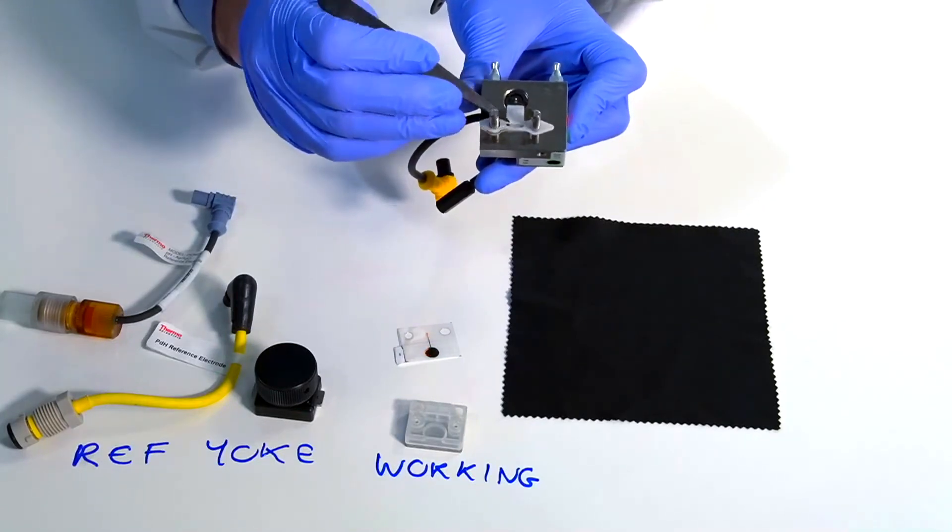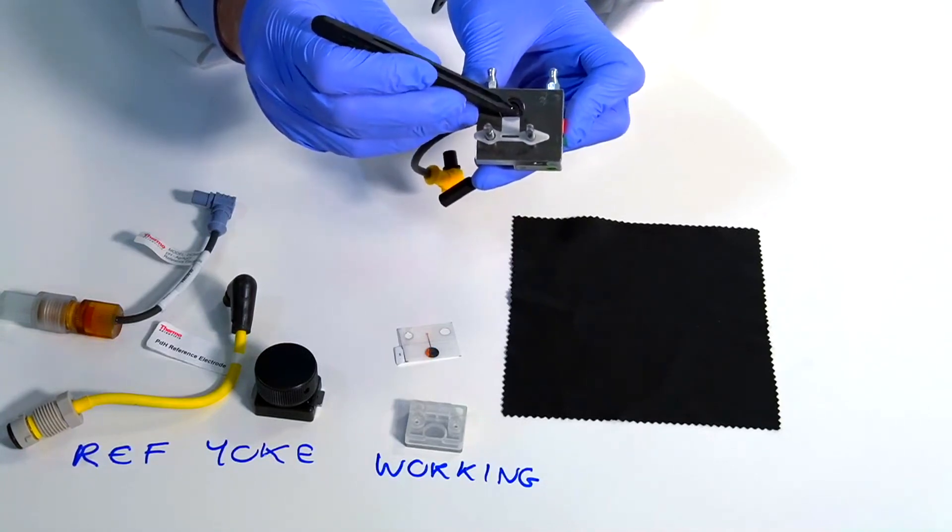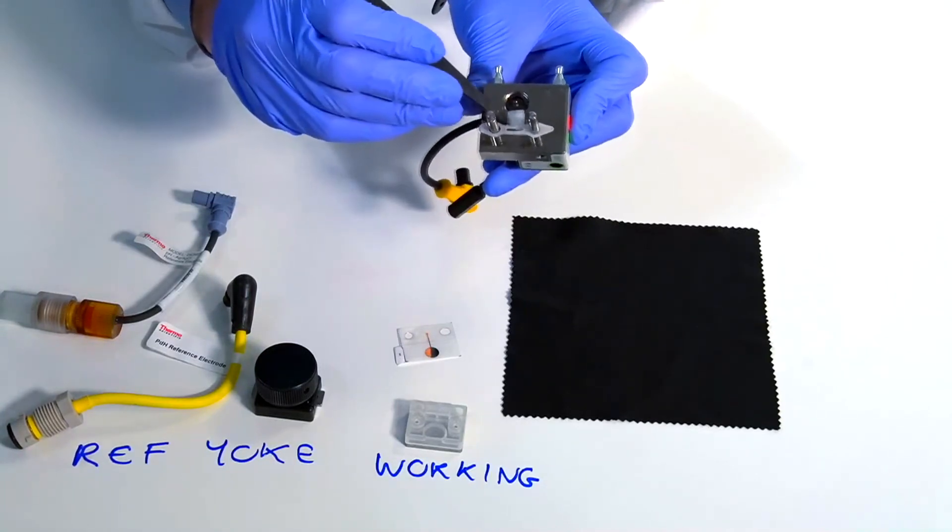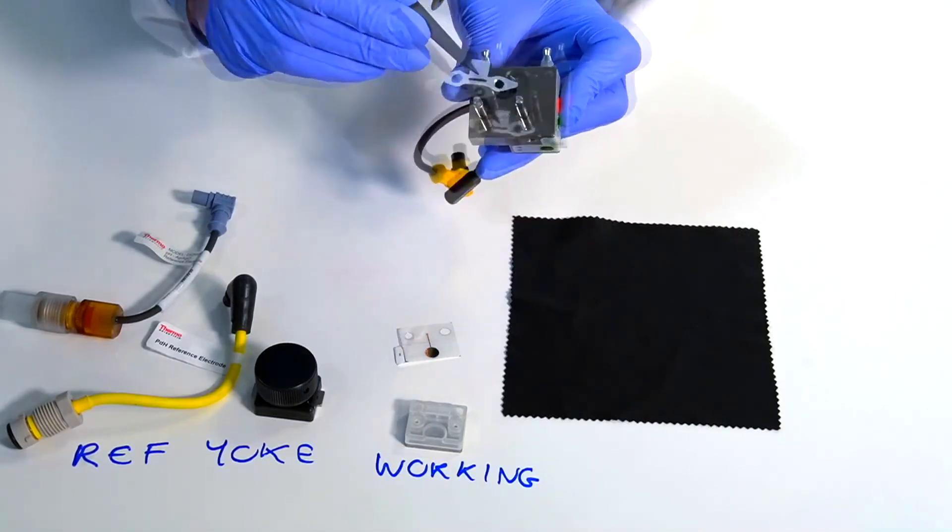It's also very important with the disposable one that this little tag is pointing between the cell and the pin because it's an insulator as well. So the orientation is important there.